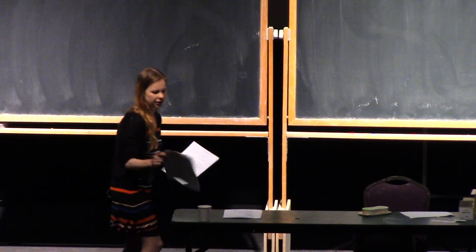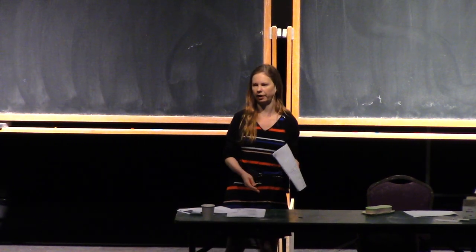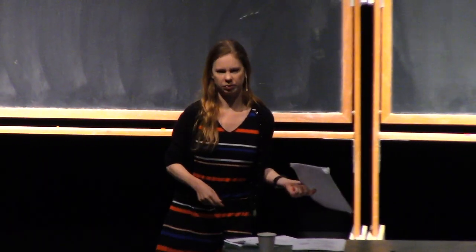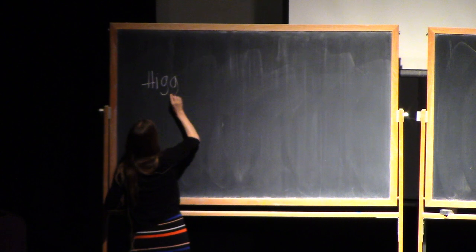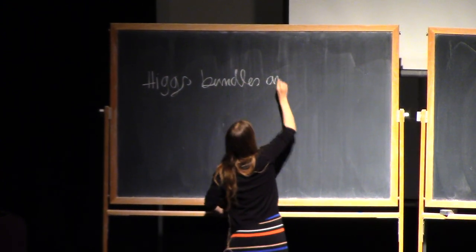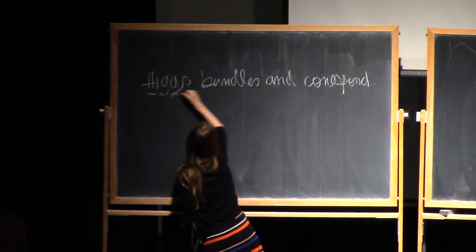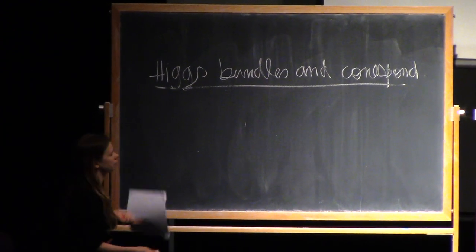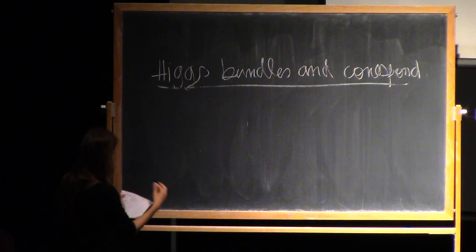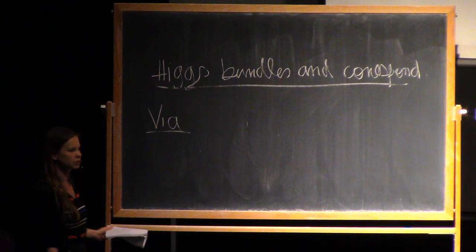So: Higgs bundles and correspondences. We'll be doing things from the fourth chapter in the lecture notes, and I'll also have to go back to something we skipped in lecture one, since parabolic Higgs bundles are related to what we want to do today. So we'll introduce parabolic Higgs bundles and see some correspondences with quivers. I want to look at correspondences coming from three different directions — and there are probably many more, but I want to start with these three.